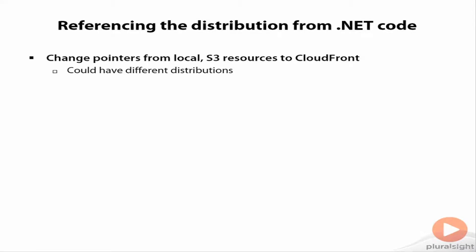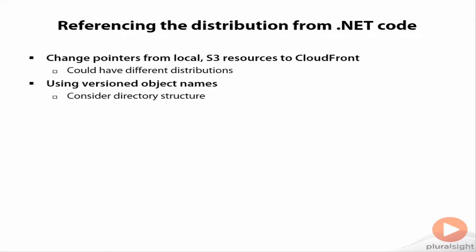We could have set up different distributions — one with one sort of content, one with another — and make the corresponding changes in your code to reference different CNAMEs that refer to each one. Ideally you're using versioned object names. One of the best practices we'll talk about in a few moments is that you don't just overwrite one copy of a file with another in the origin server, because then you're still stuck waiting for the expiration to happen.